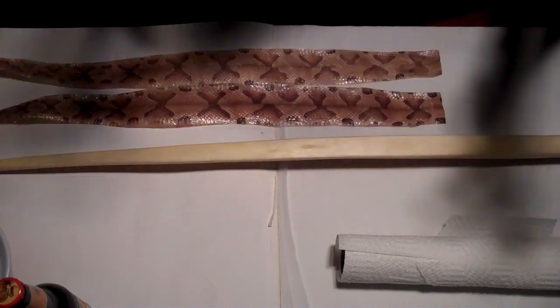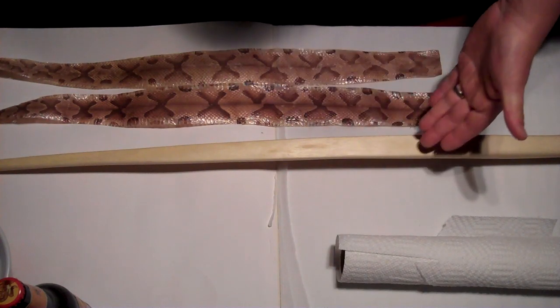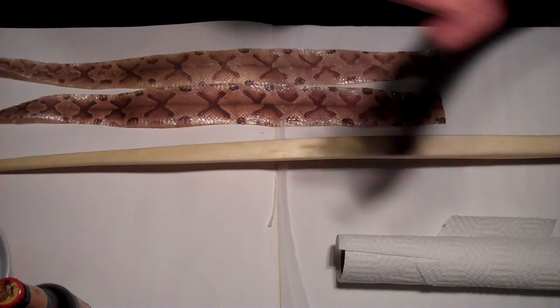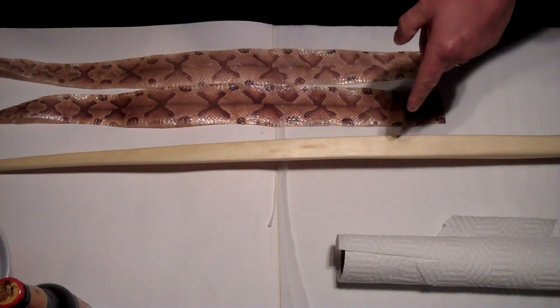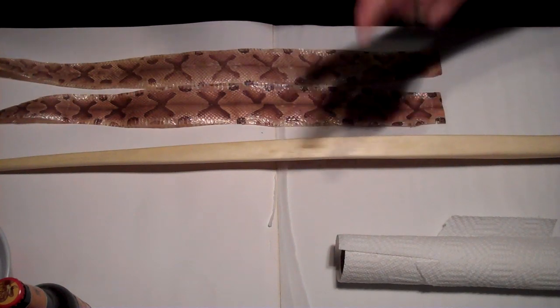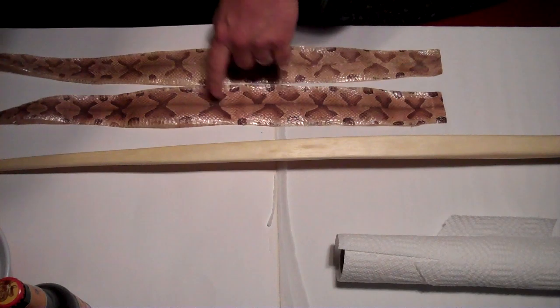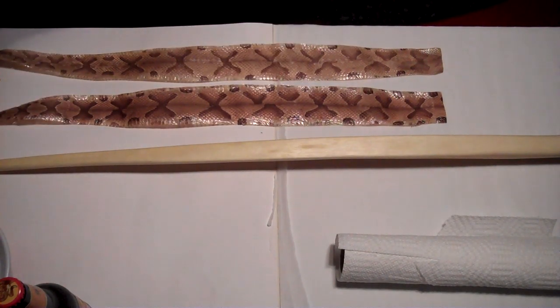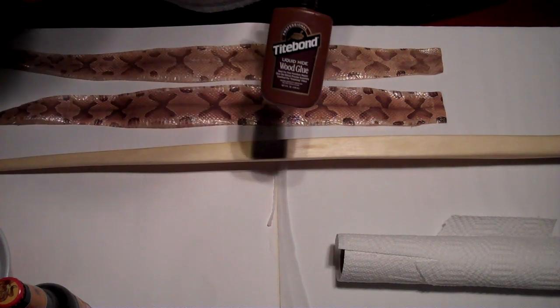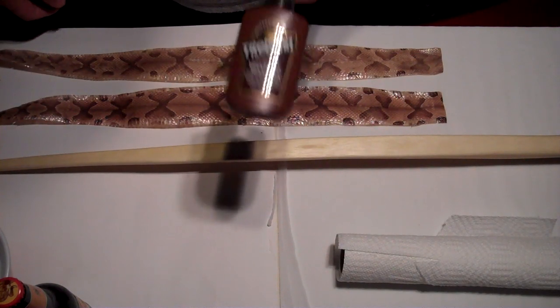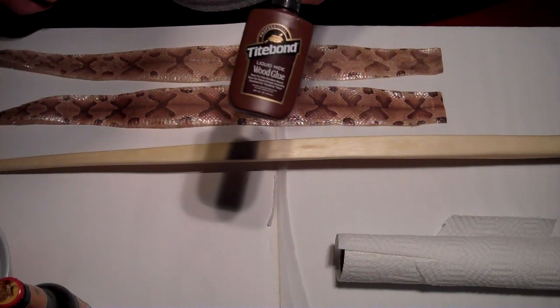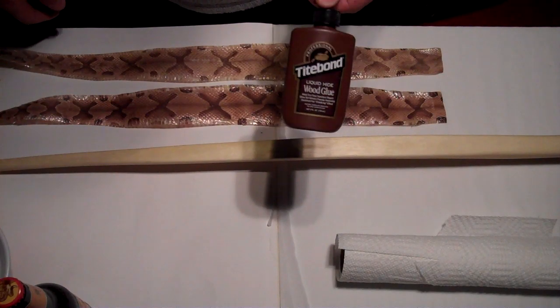All right, so here's the equipment we're going to be using today. The first thing you need, of course, is a bow. This is a mulberry bow. I believe I called it maple in the last video, but it is actually mulberry. You're going to need some skins. In this case, we're using copperhead. You're going to need some glue. I prefer this glue. It's Titebond liquid hide wood glue. It cleans up really easy with water, and the skins just seem to love it.